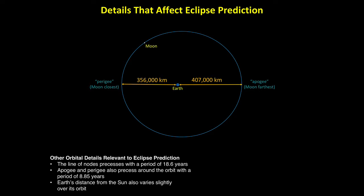Today, with these details known, we can make precise eclipse predictions thousands of years into both the past and future.